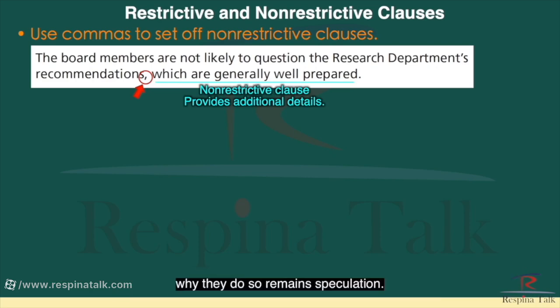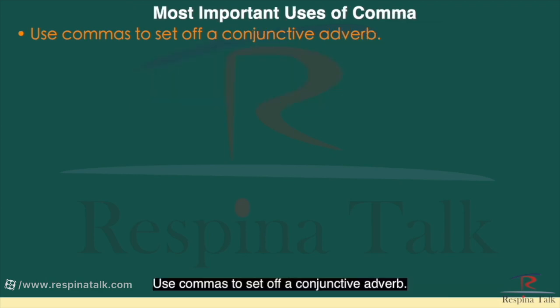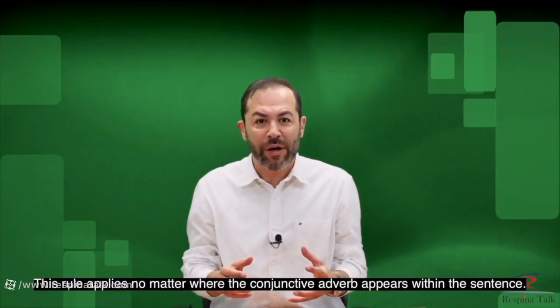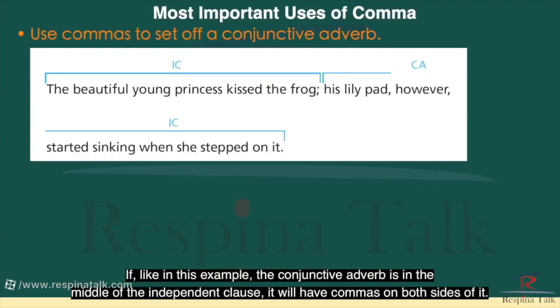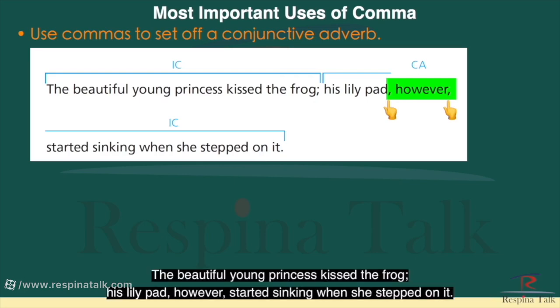Use commas to set off a conjunctive adverb. This rule applies no matter where the conjunctive adverb appears within the sentence. If the conjunctive adverb is in the middle of the independent clause, it will have commas on both sides of it. Look at the example: 'The beautiful young princess kissed the frog. His lily pad, however, started sinking when she stepped on it.'